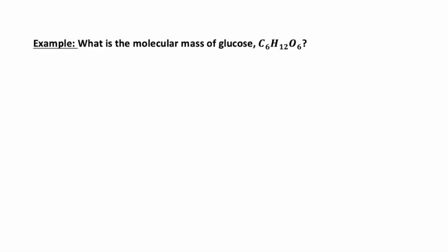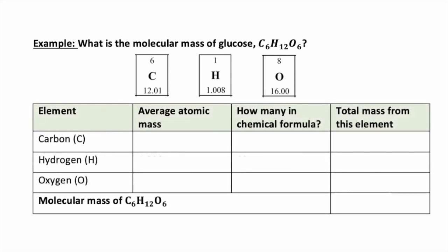What is the molecular mass of glucose with the chemical formula C6H12O6? We will make a table to help us figure this out. First, the average atomic mass of carbon is 12.01 atomic mass units. We have six carbon atoms in the chemical formula. Multiplying gives us 72.06 AMU — the total mass contributed by carbon. For hydrogen, the average atomic mass is 1.008 AMU. There are 12 hydrogen atoms in our chemical formula, and multiplying gives a total mass of 12.096 AMU from hydrogen.